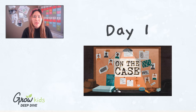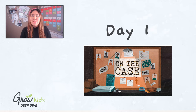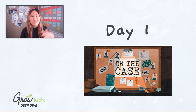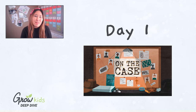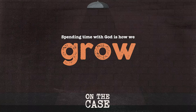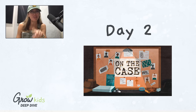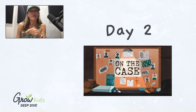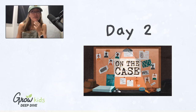Our hope is to get kids to think every day about what Jesus is really talking about. On day one, we're going to look at the parable of the sower in Luke chapter 8. Kids will hear about how the seeds the farmer planted fared in different types of soil, and it was only the seed planted in good soil that thrived. That's why the big idea for day one is: spending time with God is how we grow.